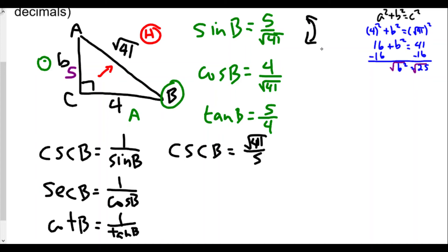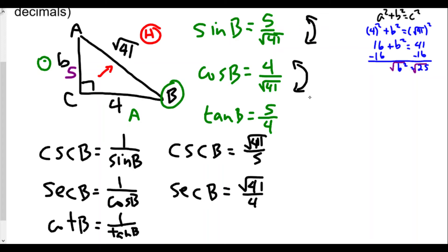Secant of B is 1 over cosine, so secant of B is √41 over 4 — we take the reciprocal of cosine. The key thing is: find the sine, cosine, and tangent ratios of the angle and take the reciprocal of each. People think cosecant is the reciprocal of cosine — that's not the case. Cosecant is the reciprocal of sine, and secant is the reciprocal of cosine. Finally, cotangent of B is 1 over tan of B. Since tan B is 5 over 4, cotangent of B is 4 over 5.